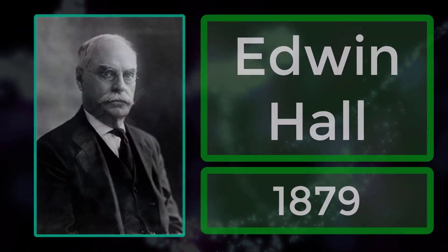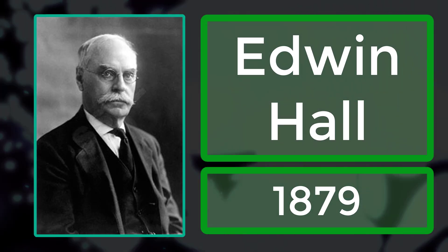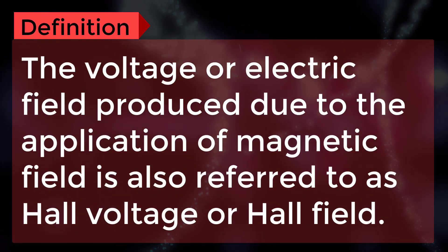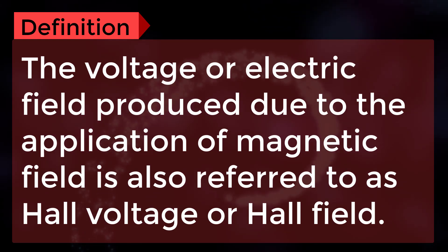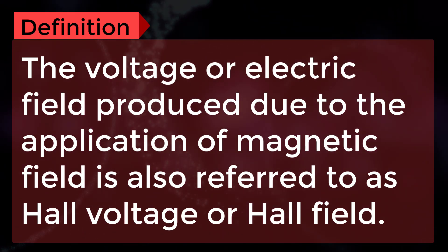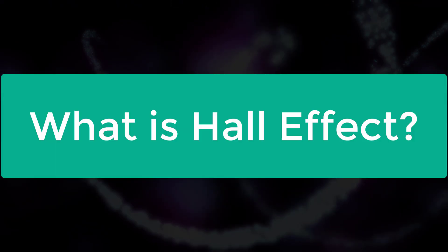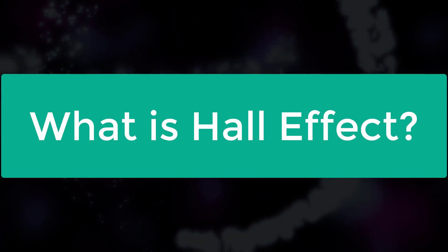This phenomenon is known as Hall Effect. Hall Effect was discovered by Edwin Hall in 1879. The voltage or electric field produced due to the application of magnetic field is also referred to as Hall Voltage or Hall Field. Now let's look into detail about what is Hall Effect.